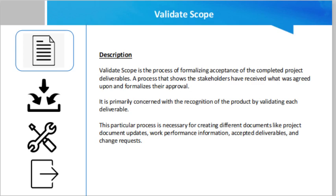This process is necessary for creating different documents like project document updates, work performance information, accepted deliverables, and change requests. Since the Validate Scope process mainly focuses on the deliverables, the verified deliverables are obtained from the Control Quality team. The deliverables are reviewed with the customer to ensure they have been satisfactorily completed. Different outputs of the project management knowledge area — like scope baseline and work performance data — are treated as the baselines for final acceptance.